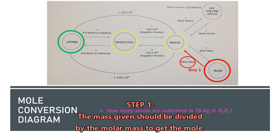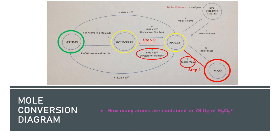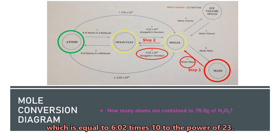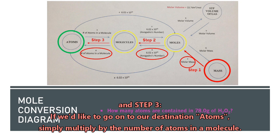Step one: the mass given should be divided by the molar mass to get the moles. Step two: to find the molecules, the moles should be multiplied by Avogadro's number, which is equal to 6.02 times 10 to the power of 23. And step three: if we would like to go on to our destination — atoms — simply multiply by the number of atoms in a molecule.